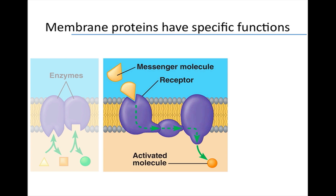Other proteins function as receptors for chemical messengers from other cells. A receptor protein has a shape that fits a specific messenger. Often, the binding of the messenger to the receptor triggers a chain reaction involving other proteins, which relay the messages to molecules that perform specific functions inside the cell. This message transfer process is called signal transduction.